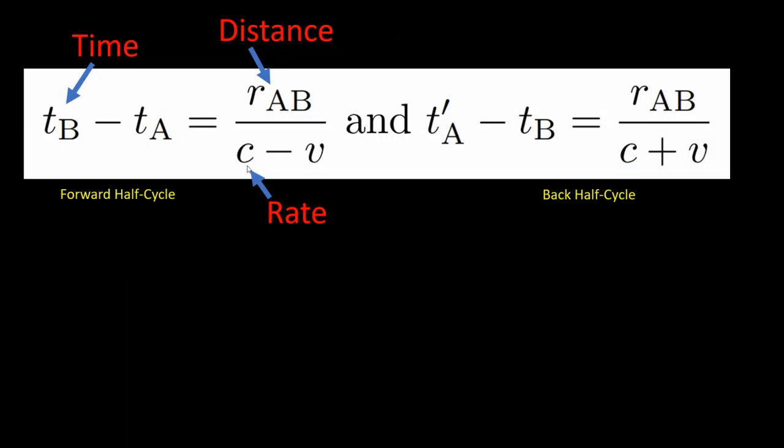Now c is the speed of light constant here, but Einstein seems to be changing it using a minus velocity or a plus velocity. This is a bit misleading, so we need to rearrange these equations so that the rate is just the constant speed of light.